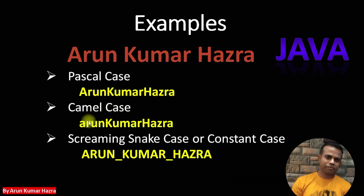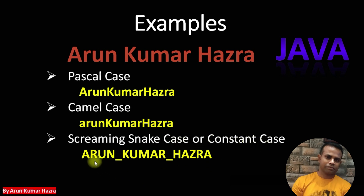In camel case, only the first letter of the first word starts with a small letter; after that, each word's first letter is represented with a capital letter, and there is no space between words. For screaming snake case or constant case, each word is written in uppercase and spaces are replaced by underscores.